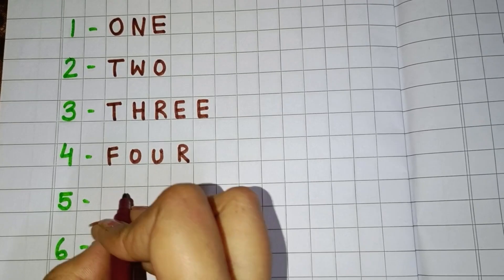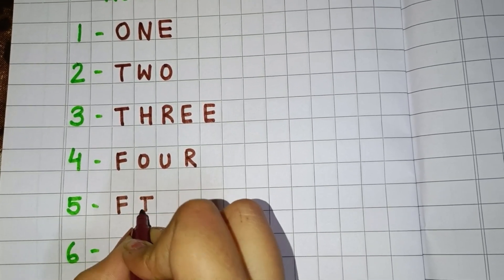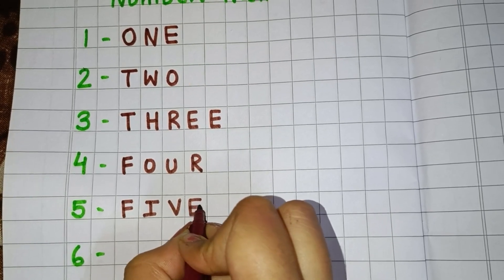Now the next is 5. So you will write F, I, V, E. Five.